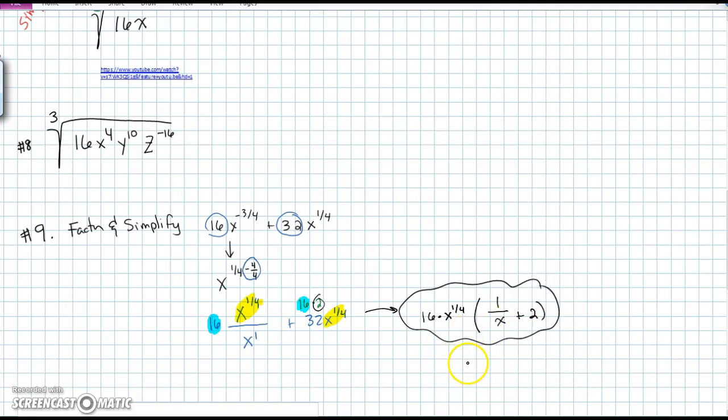This was a perfectly acceptable answer. You could also have written 16 fourth root of x times 1 over x plus 2. And if you had something else that was also correct, I'm sure I gave you credit, because this was such a hard one.